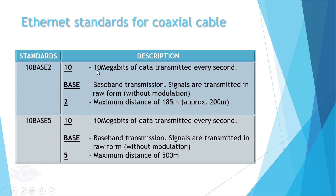The coaxial cable comes in two types or standards: 10Base2 and 10Base5. In 10Base2, 10 means that 10 megabits of data passes through the cable every second, and BASE represents baseband, which means the signal passing through the cable is transmitted in its raw form. 2 represents the maximum distance of transmission approaching 200 meters, but the actual distance is 185 meters. The same principle applies to 10Base5, except that its maximum transmission distance is 500 meters.